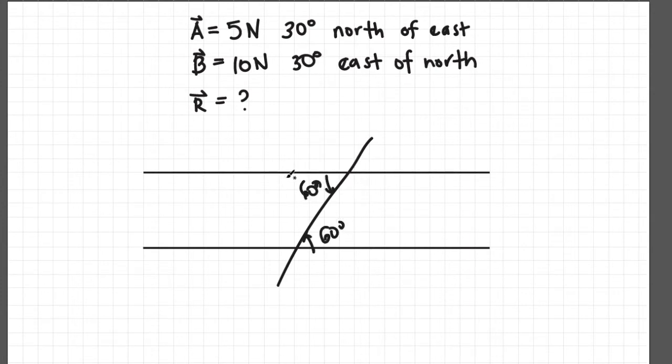These two angles here are actually called alternate interior angles. Again, when you have two parallel lines and they are intersected by a straight line, then alternate interior angles are equal.